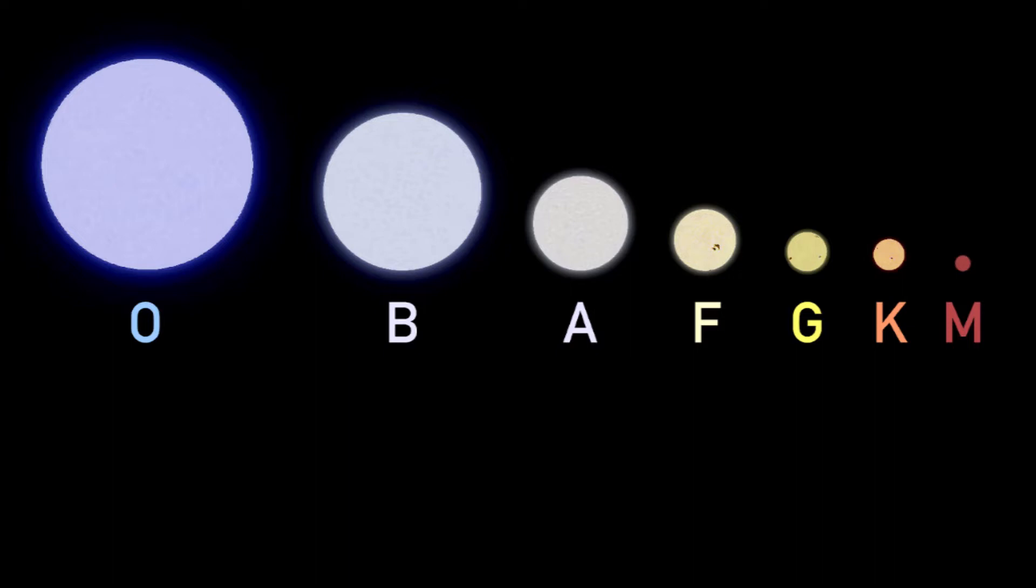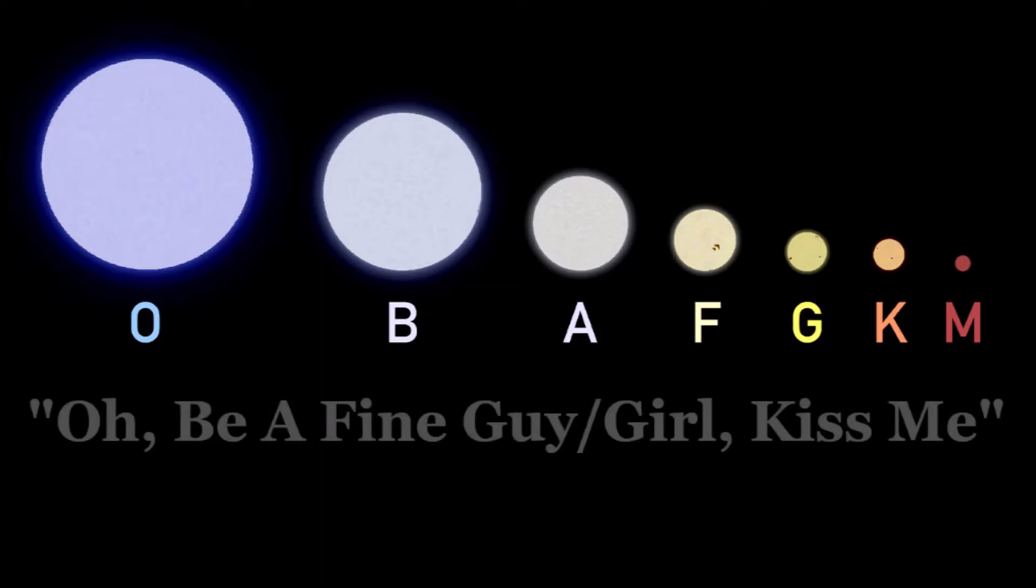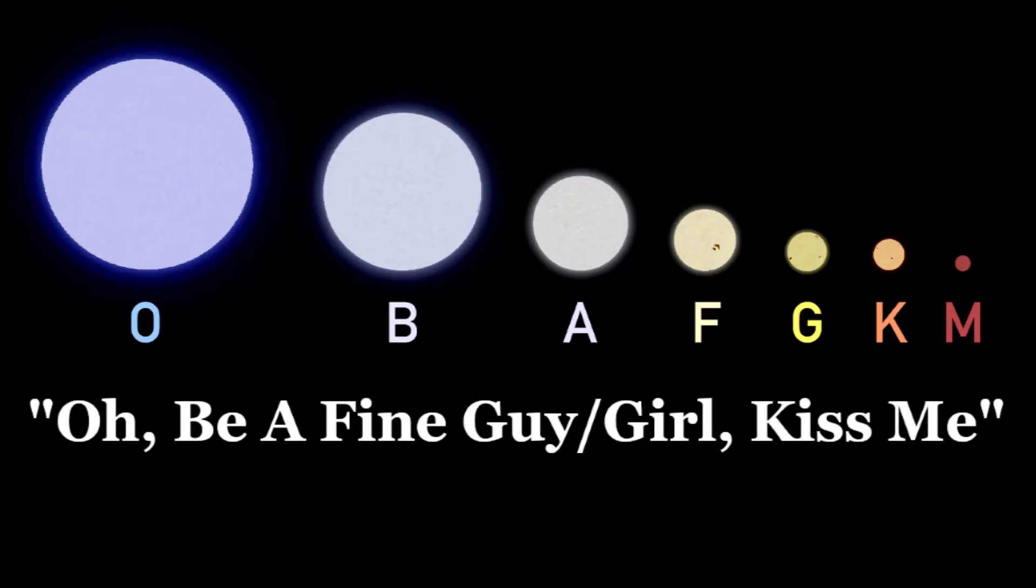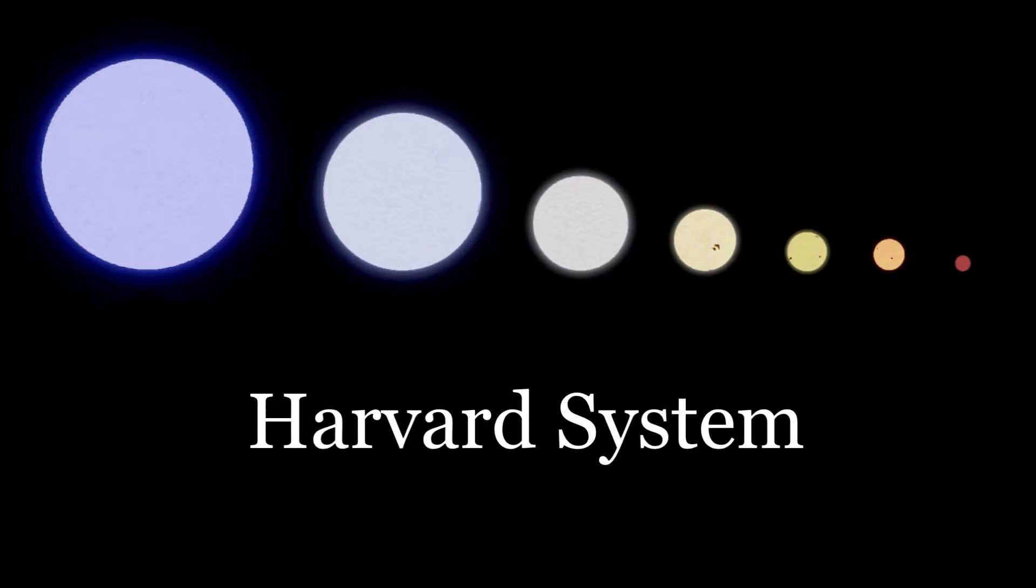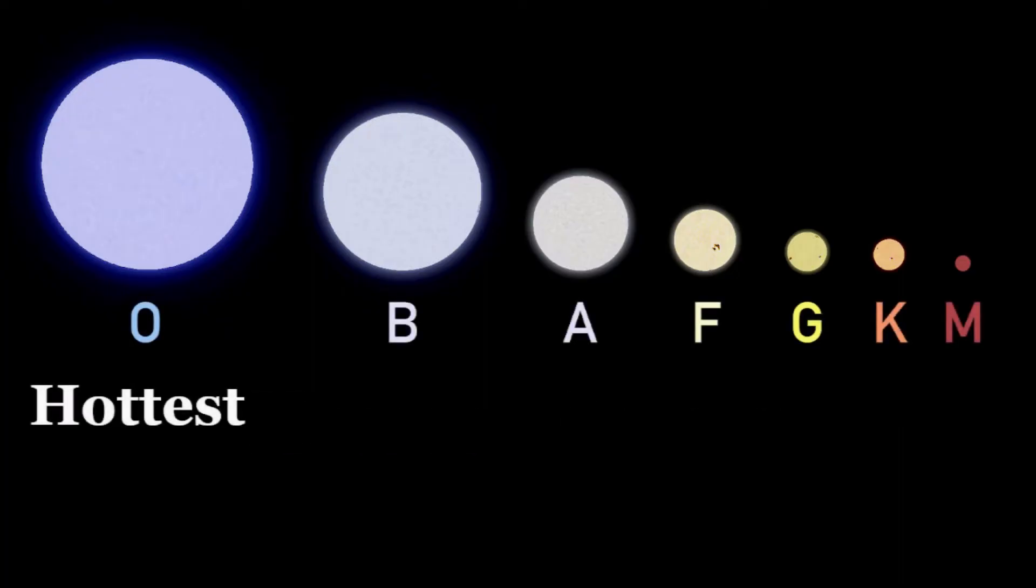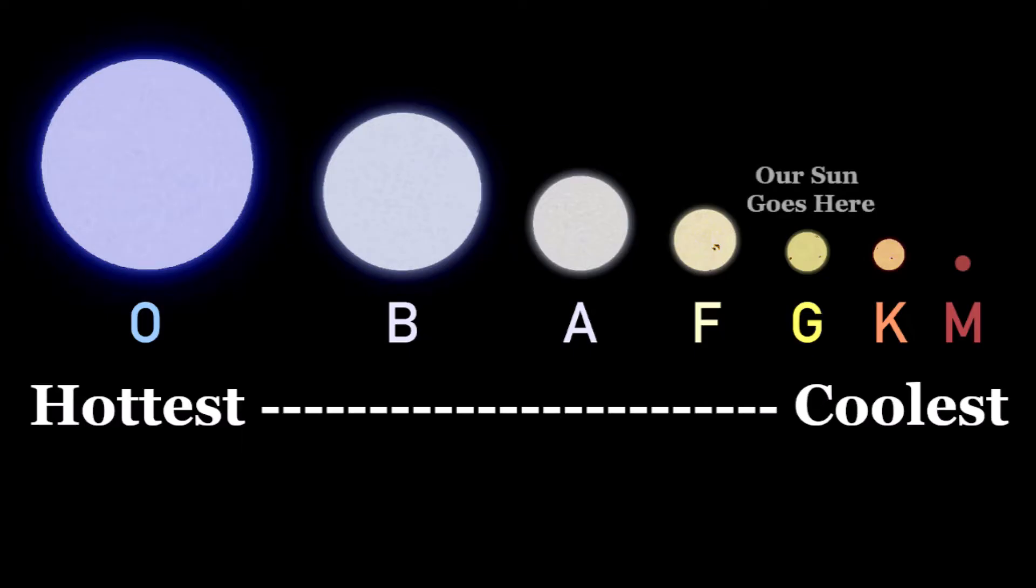Fortunately, Annie Jump Cannon also created a mnemonic to help remember them: O, be a fine guy, or girl, kiss me. This new classification system was called the Harvard system. Under the Harvard system, O-type stars are the hottest and M-type stars are the coolest. Our sun is a G-type star, near the middle.